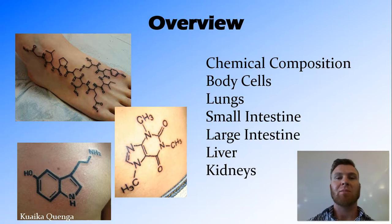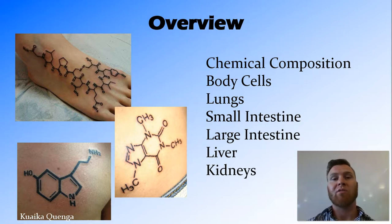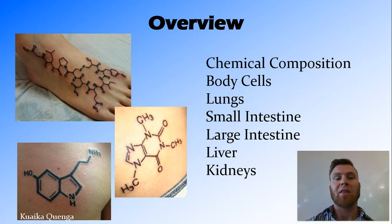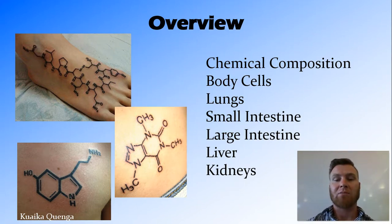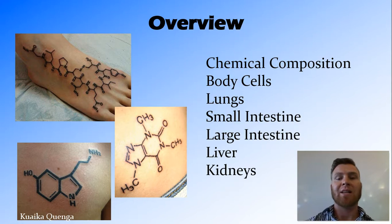So in this video we've talked about the changes in chemical composition as blood moves around the body — chemical composition referring to what is present in the blood and whether that's increasing or decreasing. We've talked about body cells where metabolism is going on, the lungs which are for gaseous exchange, the small intestine absorbing nutrients, the large intestine absorbing water, the liver undergoing detoxification, and the kidneys which undergo filtration and excretion of water and urea.